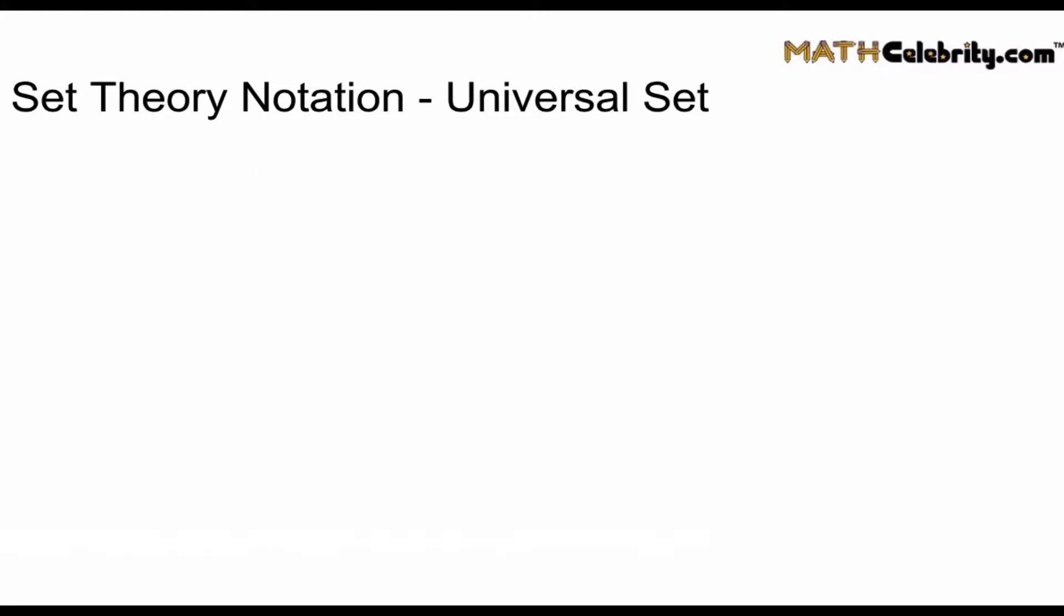So in set theory there's always a universal set. It could be the set of all things in the universe or it could be a set that you define as all potential possibilities. The universal set is denoted as U and it's a set of all possible values that you define.